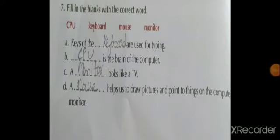In question number 7: Fill in the blanks with the correct word. A. Keys of the keyboard are used for typing. B. CPU is the brain of the computer. C. A monitor looks like a TV. D. A mouse helps us to draw pictures and point to things on the computer monitor.